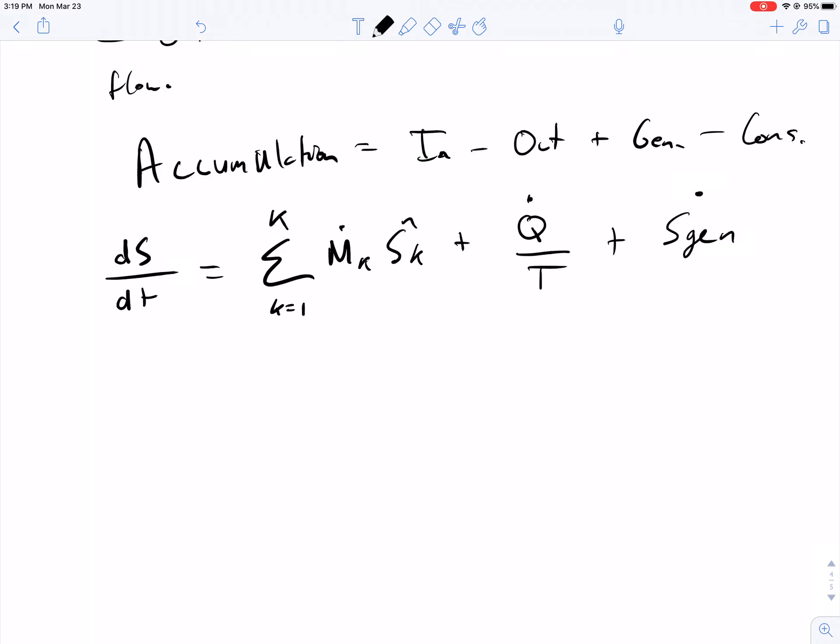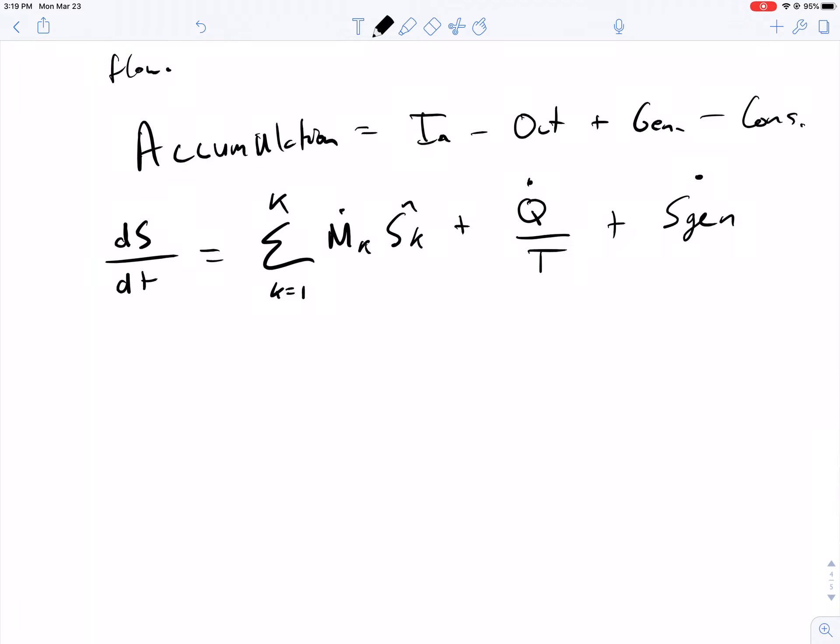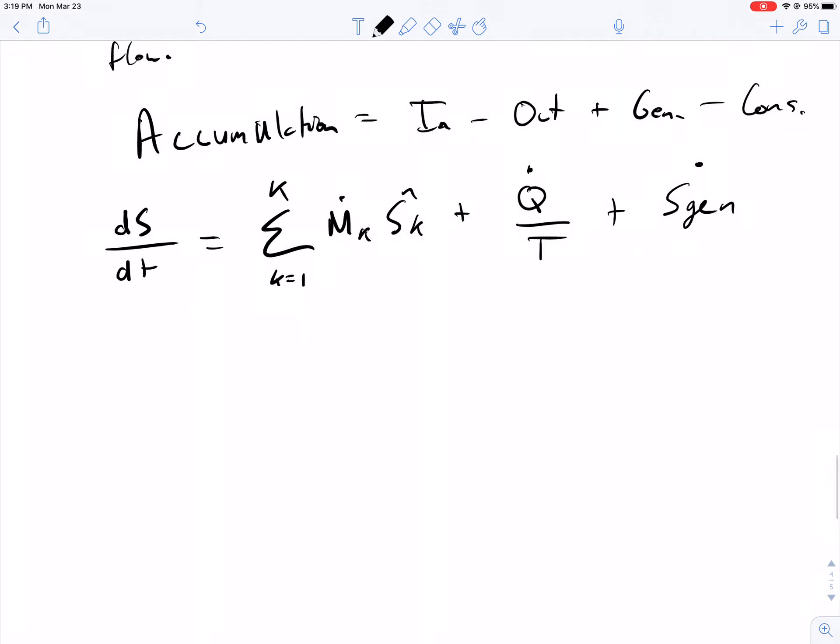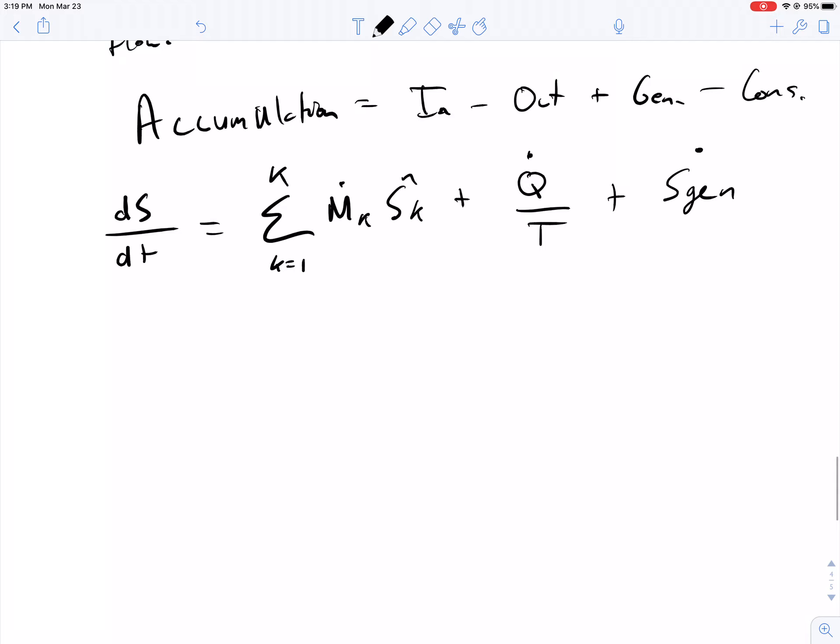It's this S_gen term that we know is there. It's hard to calculate sometimes, but this is one of the driving forces for energy. Of course, this here is entropy from mass flow—we just discussed this—and of course, this is heat flow across boundaries.